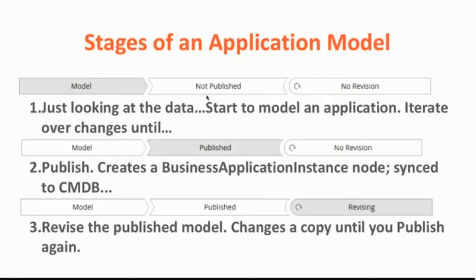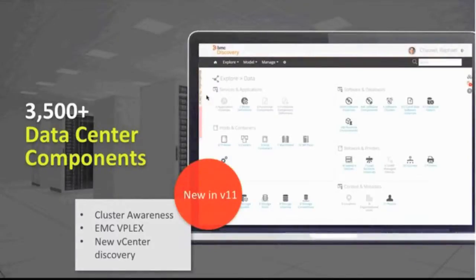We go through several stages of being able to model, to publish. As soon as we publish, it's made available and synced to the configuration management database. If we need to revise it, we can go back in, edit it, revise it, republish it, and those changes will be reflected immediately in the CMDB. Let's talk about some of the other enhancements in the new version 11. We currently recognize and interrogate accurately over 3,500 different data center components — operating systems, routers, switches, printers, mainframes, load balancers, and so on. You won't find that level of commitment from any other discovery vendor in the industry.